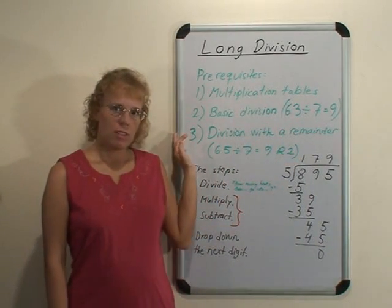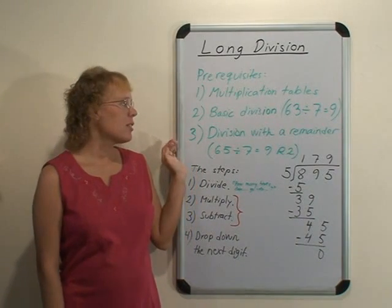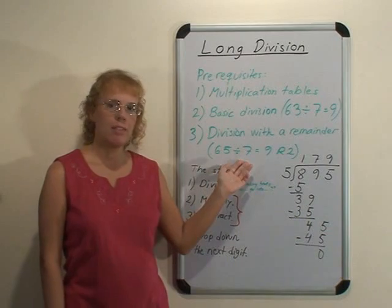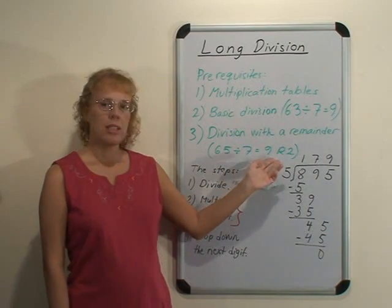The next is basic division with single digit divisors based on multiplication tables, and then division with a remainder, again based on multiplication tables. For example, 65 divided by 7 equals 9 remainder 2.